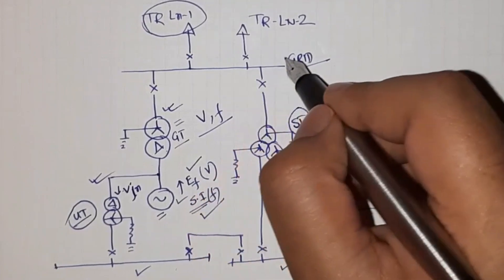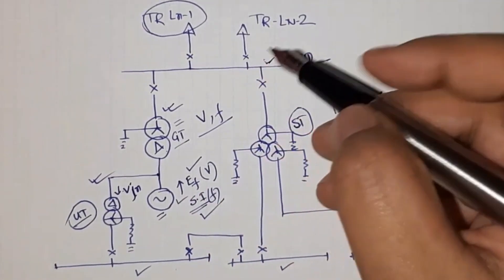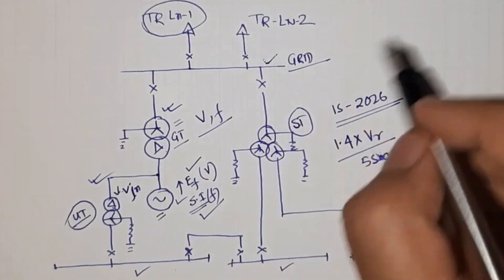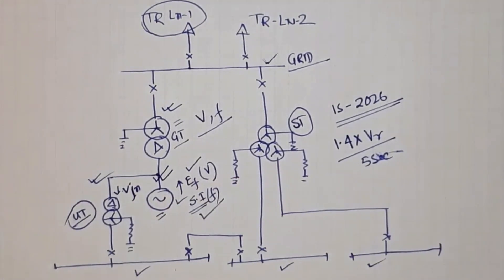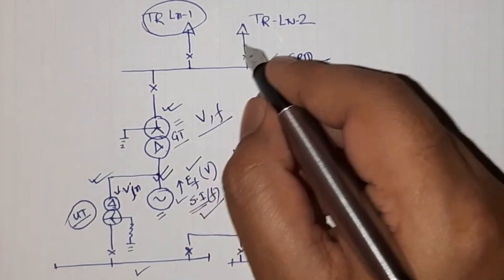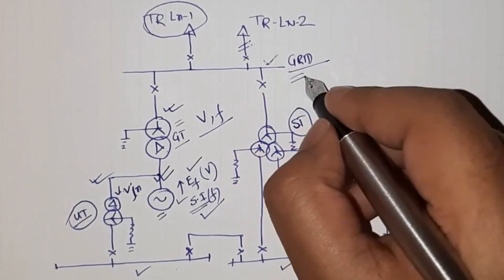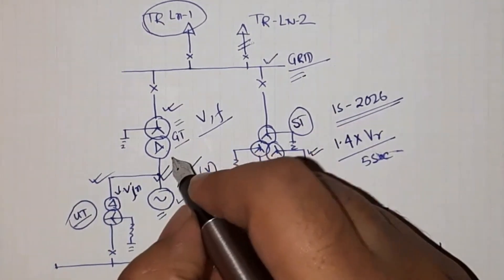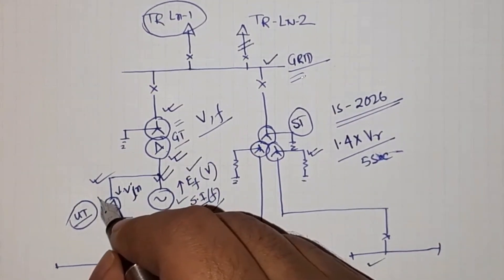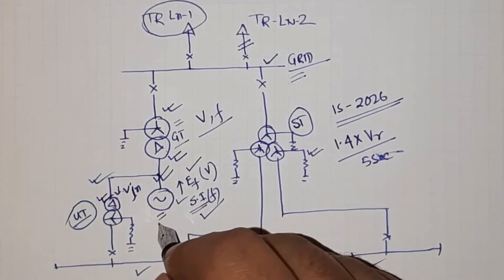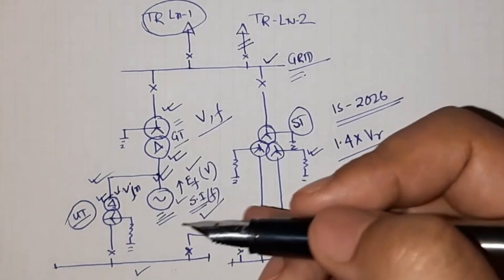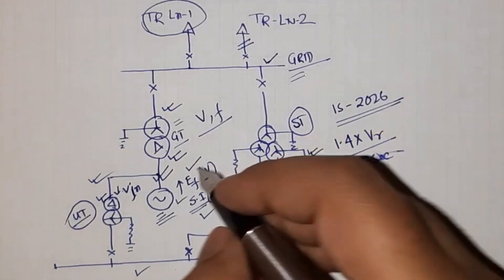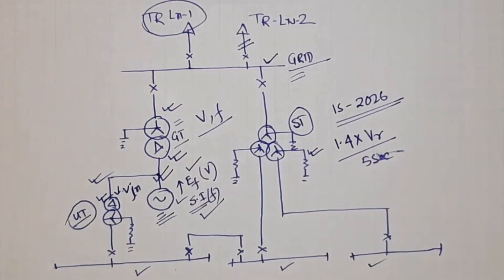The grid voltage is maintained at the same level — it cannot change. When there is a fault on the transmission line, the grid voltage will remain the same, so the station transformer voltage will remain the same and there will be no harm to the station transformer. However, the primary winding of the generator transformer and the unit transformer will face higher values of voltage and frequency, causing over-voltage and over-fluxing to these transformers. That is why they must have the over-voltage withstand characteristic.